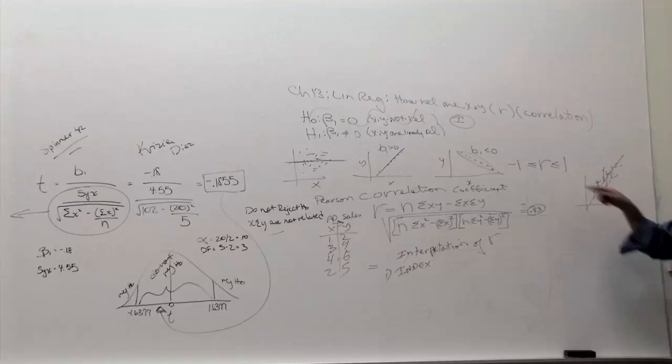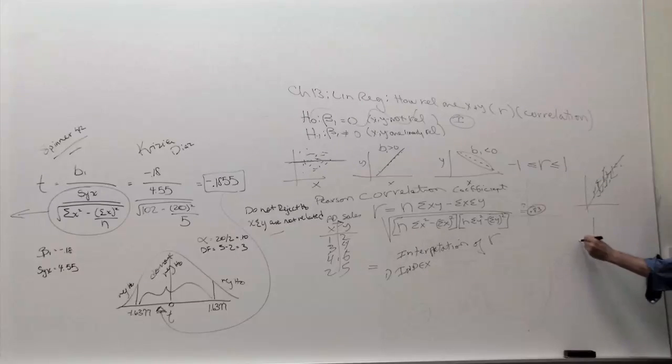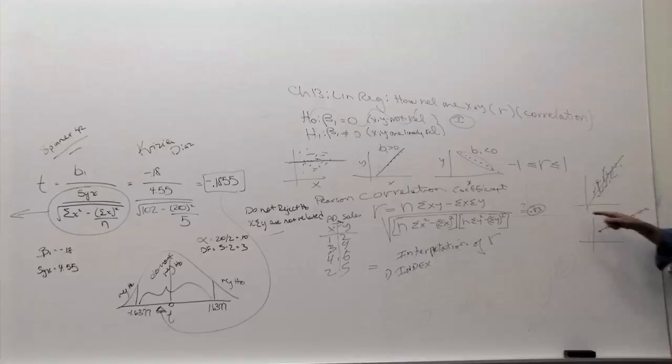The closer R is to plus 1, if x and y are perfectly related, the dots are exactly along a straight line. You can't get a better relationship than that. Then the correlation turns out to be positive 1.